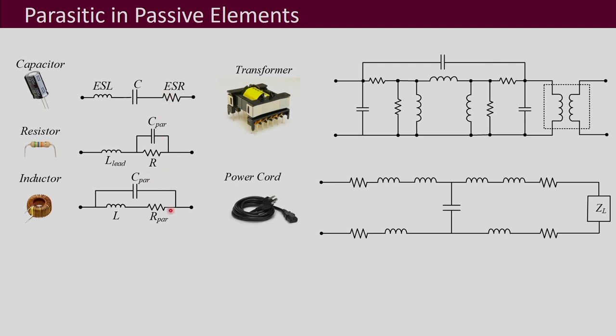What we observe is that what you think of as R, L, and C — and how we analyze the ideal circuit — none of them is really purely R, L, or C. It is all a combination: every element, whether it is R, L, or C, has all three of them present in it.